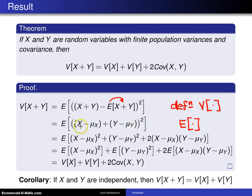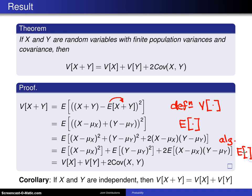Now at this point, you can square out what we have here. This quantity squared will be the first term squared plus the last term squared plus twice the product of the first and the last term. That's just a little bit of algebra done inside the expected value operator. Finally, another property of the expected value operator is that the expected value of a sum is the sum of the expected values.